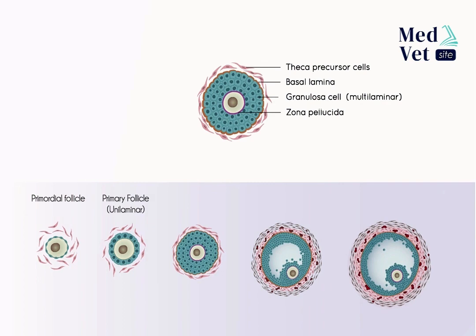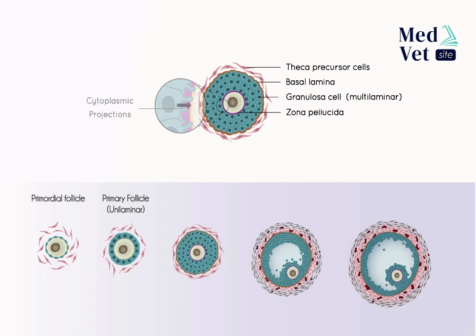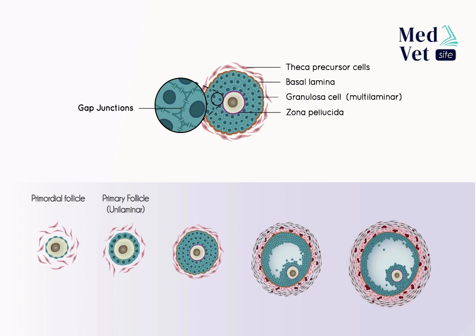At the same time, the granulosa cells begin to develop cytoplasmic extensions that cross the zona pellucida in order to establish direct contact with the plasma membrane of the oocyte, providing it with the necessary nutrients for maturation. Additionally, the granulosa cells are connected to each other through gap junctions or nexus unions, which serve as the source of intercellular communication between cells contained within the basal lamina.